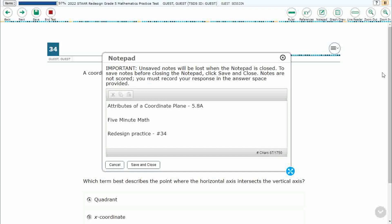Hello and welcome to 5-Minute Math. Today we are looking at the fifth grade concept of attributes of a coordinate plane. This is standard 5.8a in the great state of Texas and we are using item number 34 of the redesigned practice online STAAR test.